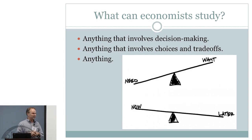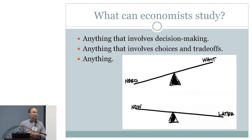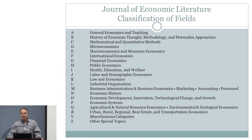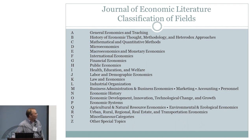So what can an economist study? Anything that involves decision-making, anything that involves trade-offs or choices — pretty much anything. This is the Journal of Economic Literature classification of fields in economics. If you can read the font, we haven't used up all the letters yet, but we're getting close. I'm not sure what we're going to do when we run out of letters.